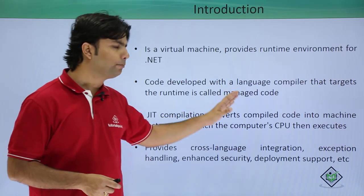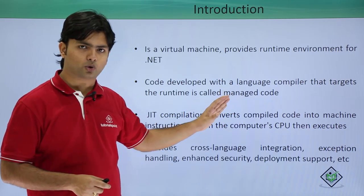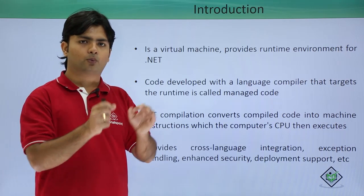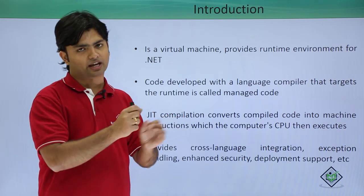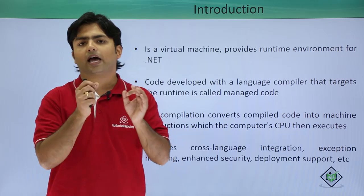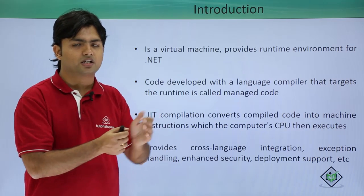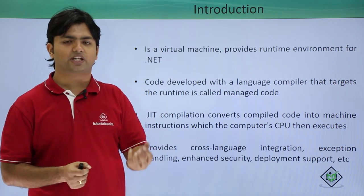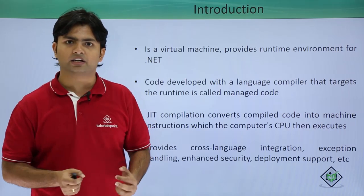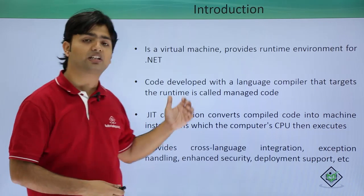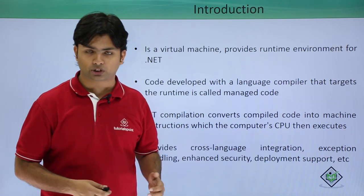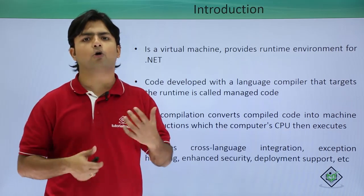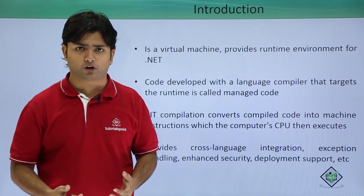For managed code, the CLR simply compiles it with the JIT — Just-In-Time compiler — resulting in machine code that any operating system can understand and begin executing, so that a developer can achieve the output they are looking for.